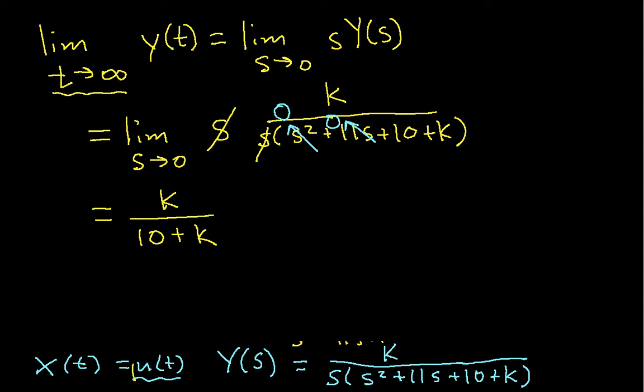You will remember that we put in u of t, so our desired output value was 1. You will notice that this output value will always be less than 1. I have K over K plus 10, so in this case the denominator is always going to be larger than the numerator, so my steady state value will always be less than 1. As K gets big, the steady state value approaches 1, but it will never actually reach 1.